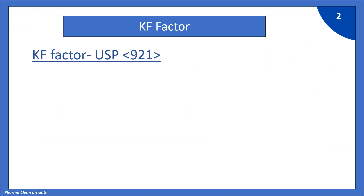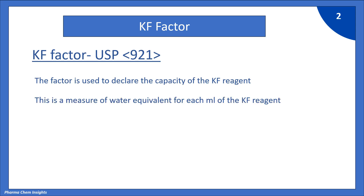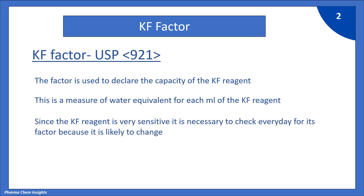KF Factor, USP 921. The factor is used to declare the capacity of the KF reagent. This is a measure of water equivalent for each ml of the KF reagent. Since the KF reagent is very sensitive, it is necessary to check every day for its factor because it is likely to change.